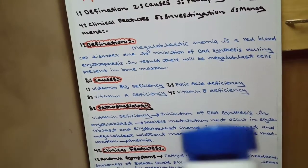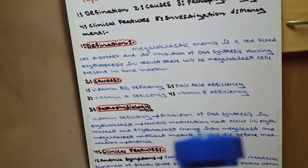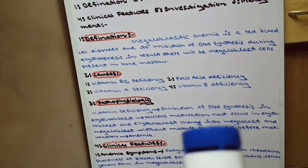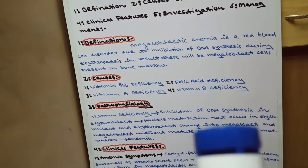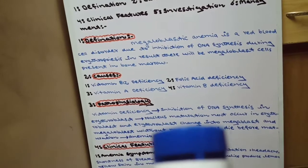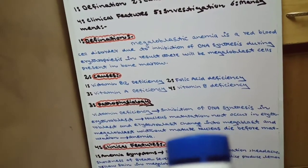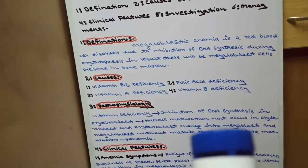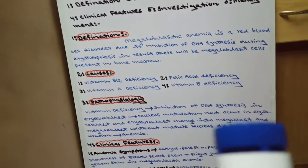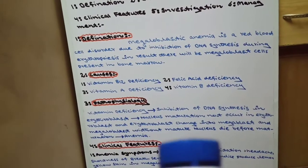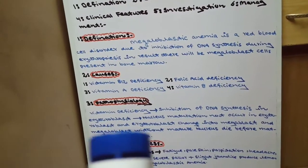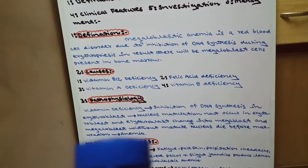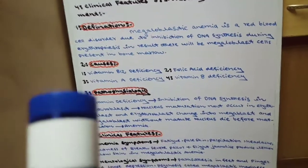Yeh jo megaloblast hai, yeh ek large size cell hai kyunki DNA cell ke size ko control karta hai. Ab DNA ki inhibition erythroblast ke andar vitamin ki deficiency ki wajah se ruk gayi, DNA synthesis ruk gayi, toh result mein erythroblast change hoga megaloblast mein. Woh megaloblast jis ke andar nucleus mature nahi hai, woh mature hone se pehle hi die ho jayega, jis ke nateeje mein anemia hogi.